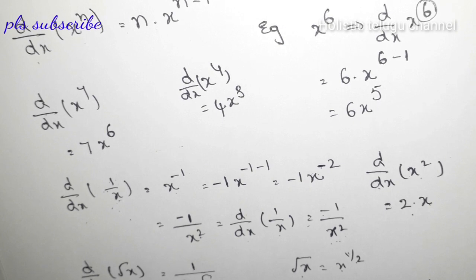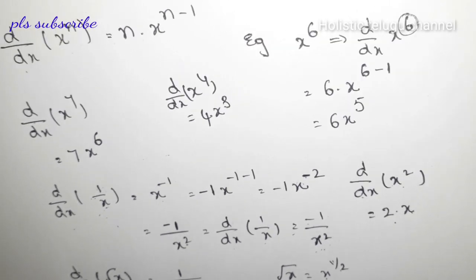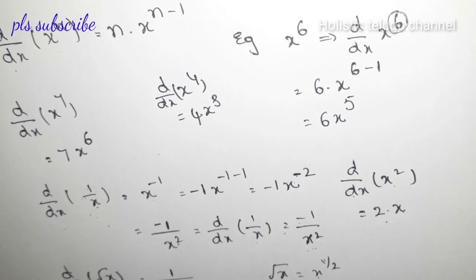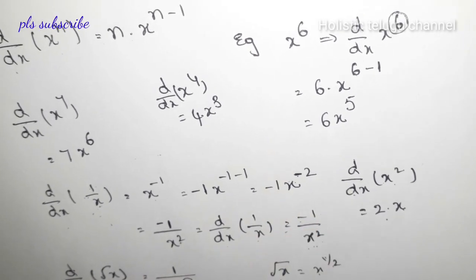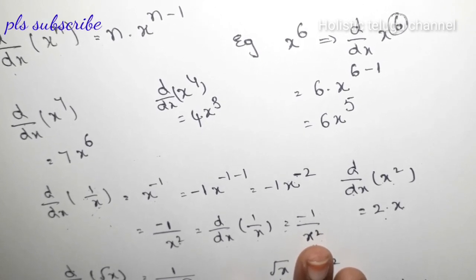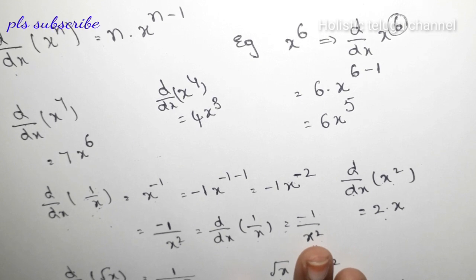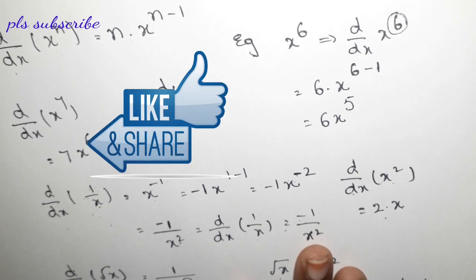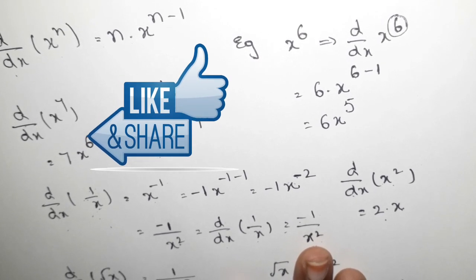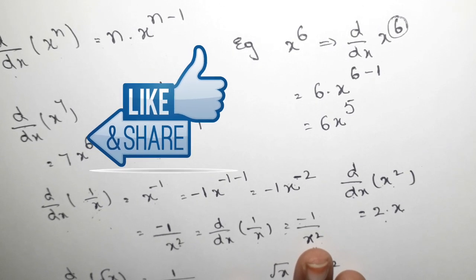The applications are: d by dx of constant equals 0; x power n equals n into x power n minus 1. These formulas are very important. If we have problems, I will explain the right formulas. I have explained 6 formulas in this differentiation. Friends, if you have any questions please comment. This is the first trial. Like, share, subscribe, press the bell icon for the latest notifications. Thank you for watching and don't forget to comment. Thank you.